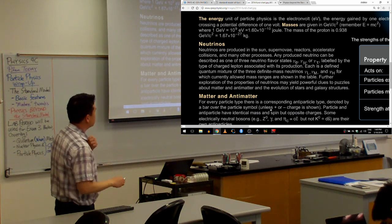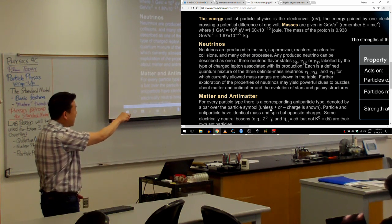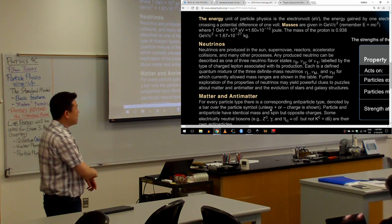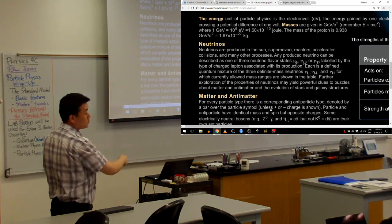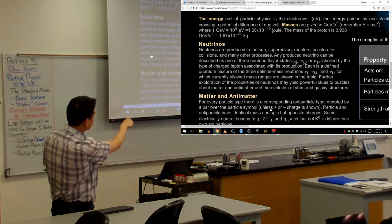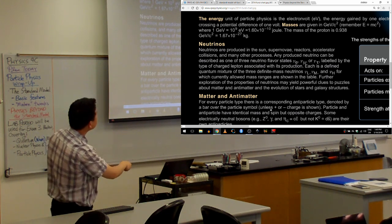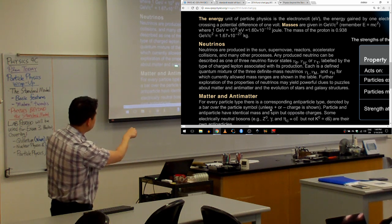So a way of saying is this. These are the weak interaction eigenstates but they are not the energy eigenstates of neutrino. These are the actual energy eigenstates of neutrino, for which currently a lot of mass ranges are shown on the table.